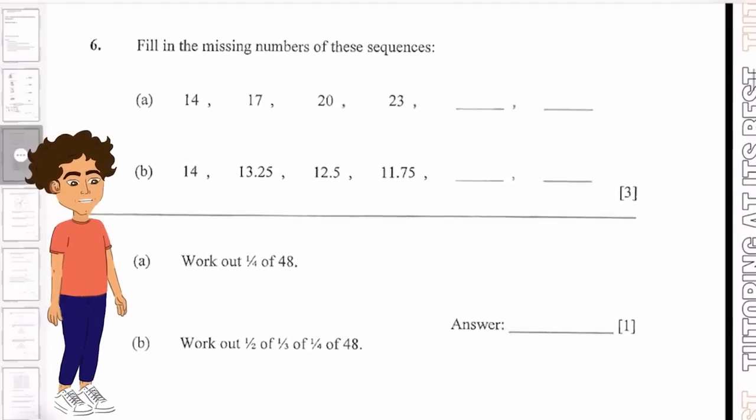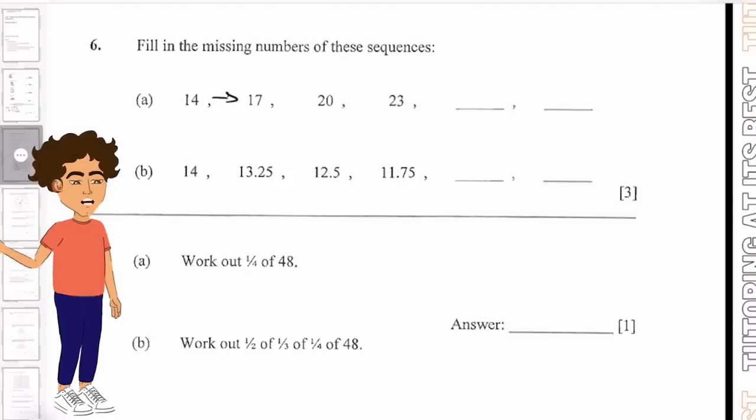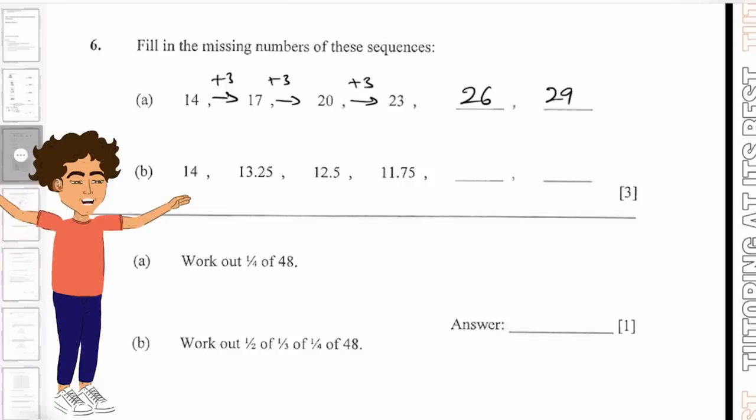Question number six. We need to fill in the missing numbers of these sequences. Let's quickly identify what the sequence is, which in this case is your plus 3. So we know it's going to be 26 and 29.